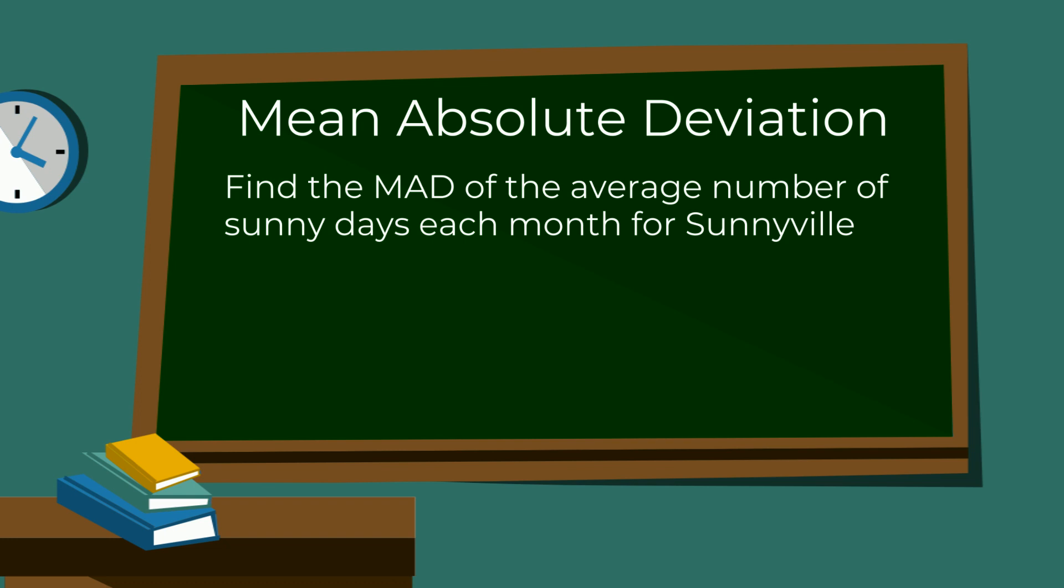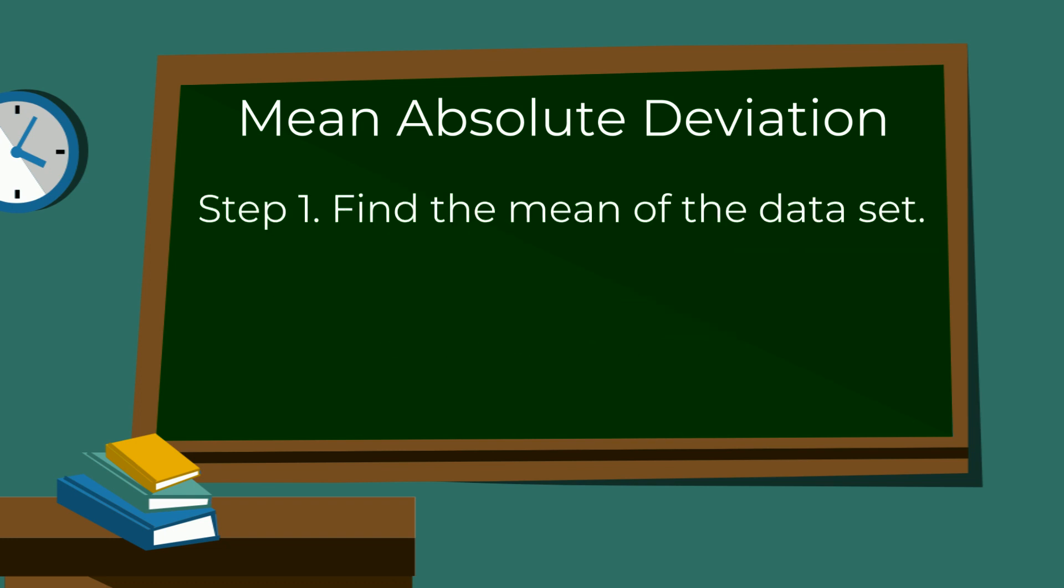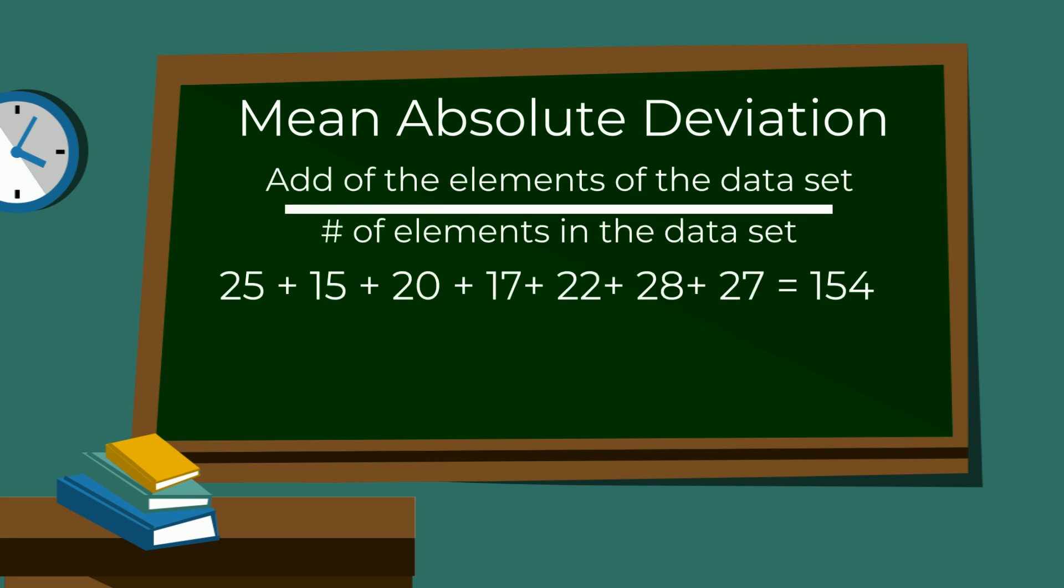Let's find the MAD of the number of sunny days a month in Sunnyville. Step 1: Find the mean. Add up all the elements and divide this by the number of elements in the data set.